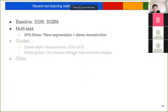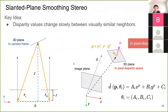Let's talk about some recent methods. These methods are also based on the SGM or SGBM method. The first one is SPS stereo, a multi-task method that does plane segmentation and stereo reconstruction at the same time. The key idea is that disparity values change slowly between visually similar neighbors — if a neighboring pixel has similar color intensity to the current pixel, the disparity should be similar.